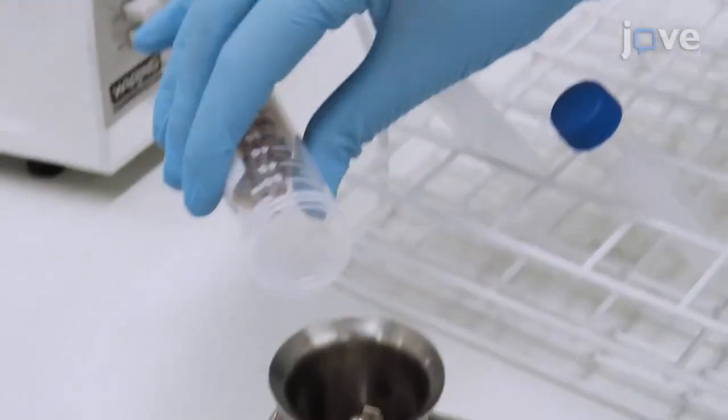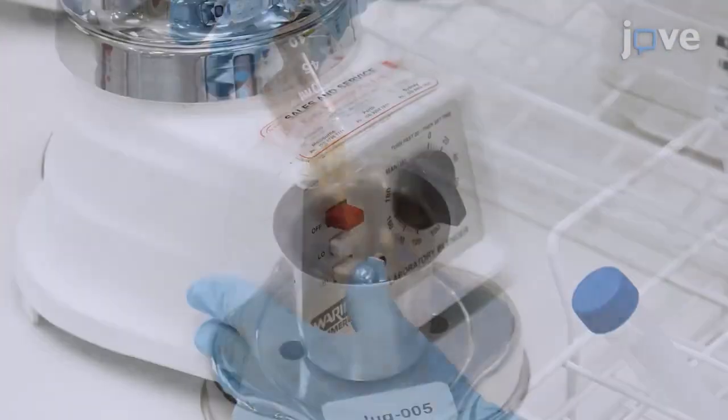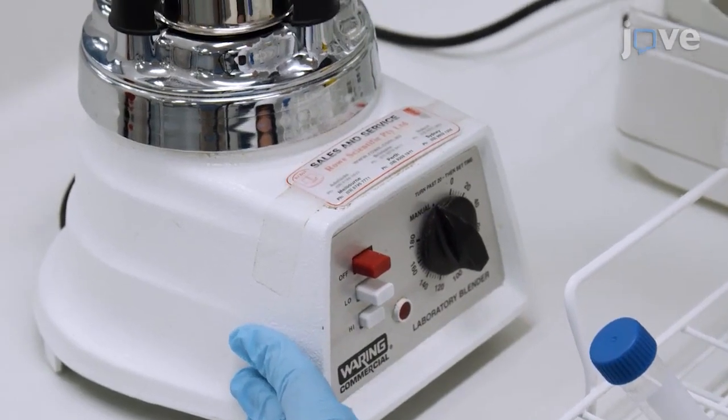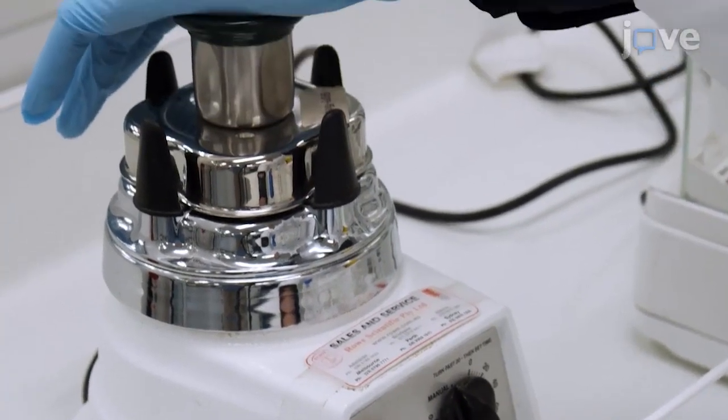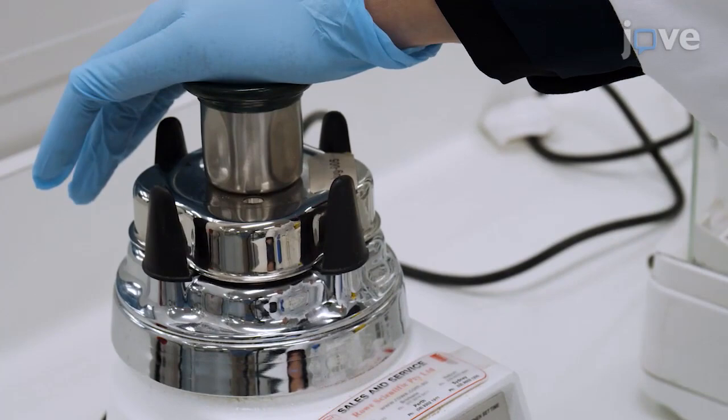To begin preparation of the grains, use a laboratory blender to grind the grain. Run the blender on high speed for 20 seconds and then repeat.